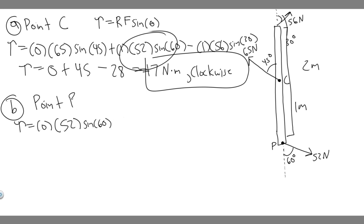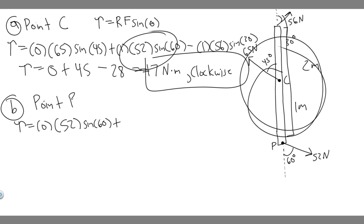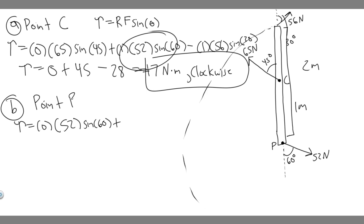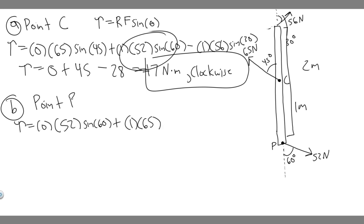Now let's move on to point C. The force is being applied this way, so it's going to cause counterclockwise rotation, which means it's going to be positive. So plus the radius — the distance from where the force is applied to where we're rotating is one meter. So one multiplied by the force, which is 65 newtons, multiplied by the sine of 45 degrees.